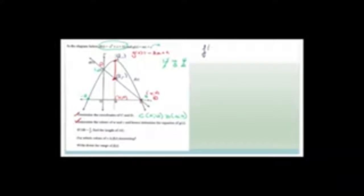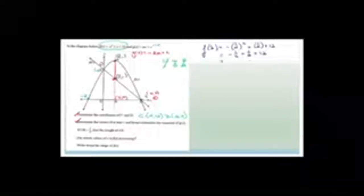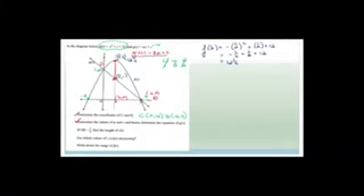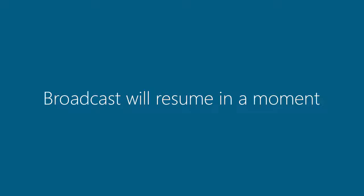We need to substitute a half into the equation for the parabola to find the y-value. F of a half equals minus a half squared plus a half plus 12, which is minus a quarter plus a half plus 12, which becomes 12 and a quarter. So the y-value on the parabola at x equals a half is 12 and a quarter. Now let's find the y-value on the straight line using G of x equals minus 3x plus 12: G of a half equals minus 3 times a half plus 12, which is 12 minus 3 over 2, which is 10 and a half.